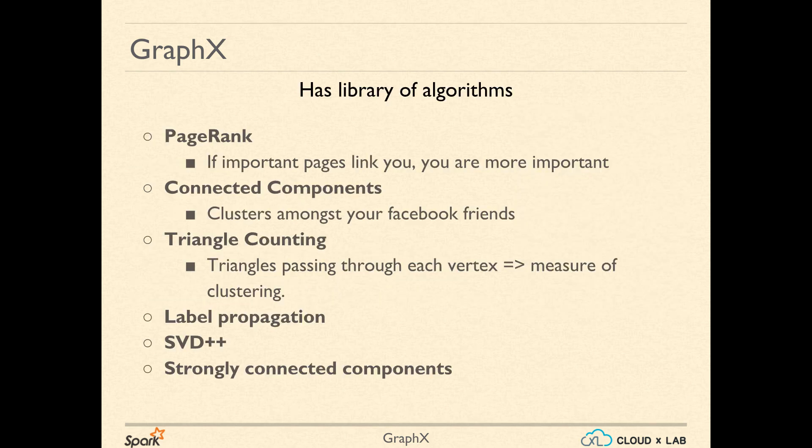GraphX provides a very rich library of algorithms that involve graph computations. GraphX provides PageRank algorithms. If important pages are linking to your website, you will be more important. This algorithm can be applied in situations other than websites. For example, we can use PageRank algorithm to find the rank of various Twitter handles. The connected component algorithms provided by GraphX can be used to identify the clusters amongst your Facebook friends. Another important algorithm on graph is triangle counting. With this algorithm, you can count the total number of triangles passing through each vertex. The count of triangles is also a measure of clustering.